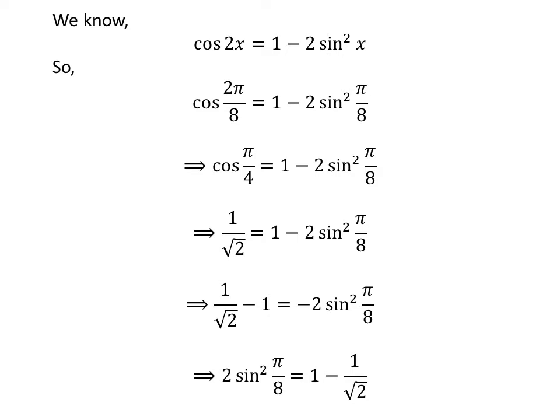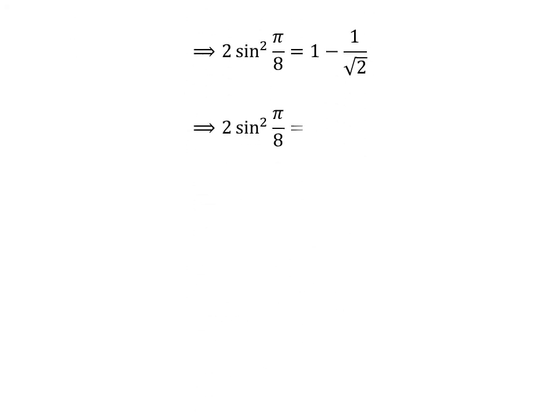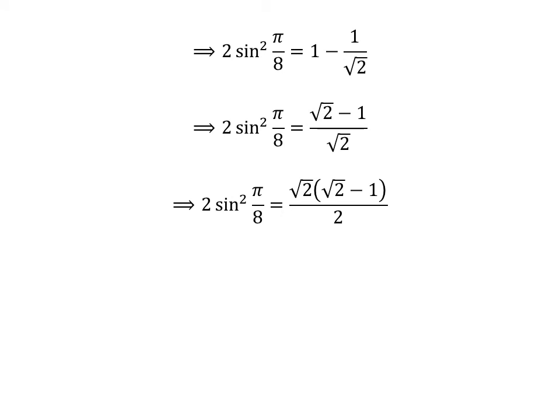Multiplying the whole expression by minus 1 and changing the sides gives us 2 times the square of sine of pi upon 8 is equal to 1 minus 1 upon square root of 2. This simplifies to square root of 2 minus 1 upon square root of 2. Multiplying the numerator and denominator by square root of 2 does not change the value of the fraction, so square root of 2 has been multiplied in both numerator and denominator.